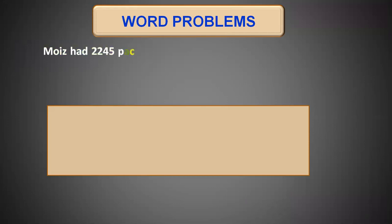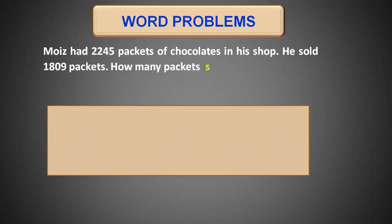Let's start our today's video with our first word problem. Moise had 2245 packets of chocolates in his shop. He sold 1809 packets. How many packets is he left with? Whenever you are solving word problems, make sure you understand the word problem correctly. For that, you have to divide the word problem into parts and analyze it. The first part says that Moise had 2245 packets of chocolate in his shop, so total packets of chocolate are 2245.